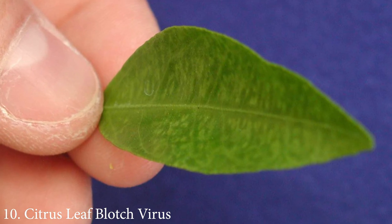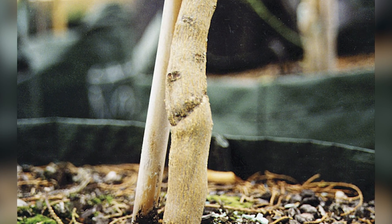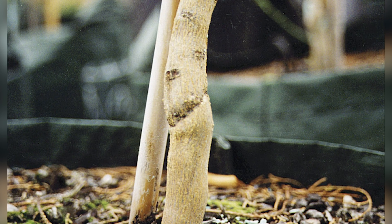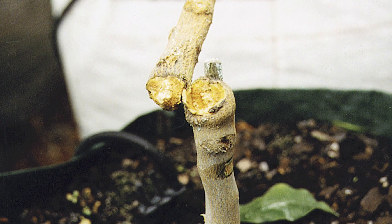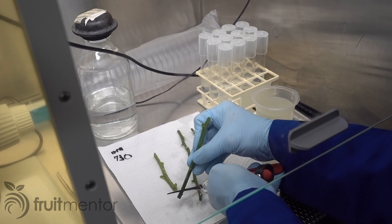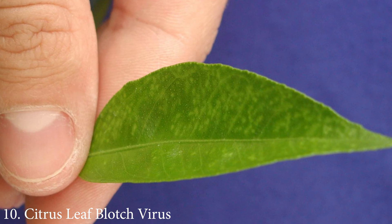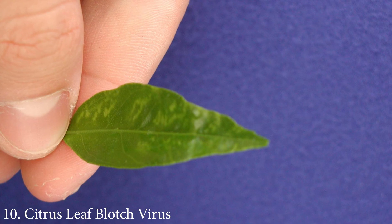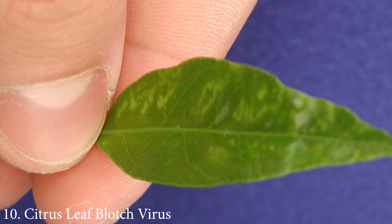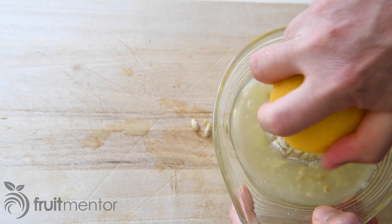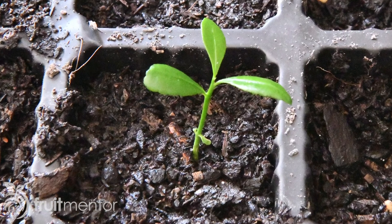The citrus leaf blotch virus can be spread by grafting. Studies in Spain found that a field isolate containing citrus leaf blotch virus and potentially other pathogens causes a bud union disorder that prevents strong graft unions. The virus was intercepted in the 1960s by the CCPP and it never entered commercial citrus production in California. However, the virus was recently discovered in a backyard tree in California. The virus is transmitted by seed and may have been introduced to California by a homeowner who planted a seed of an imported grocery store fruit.